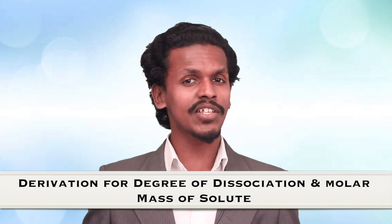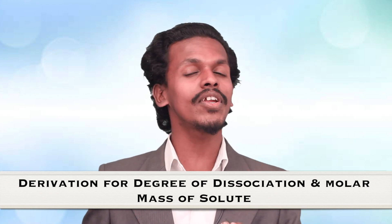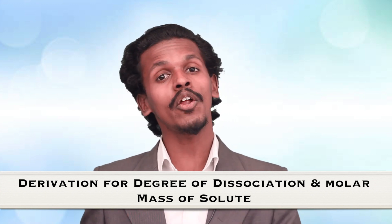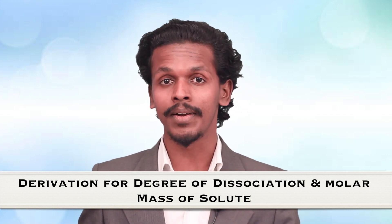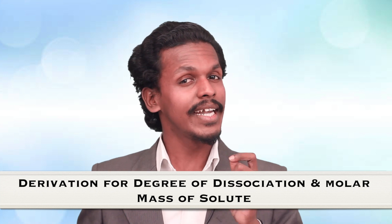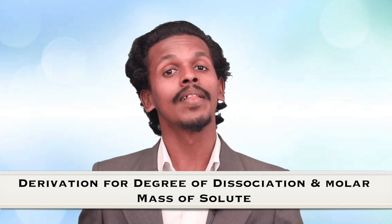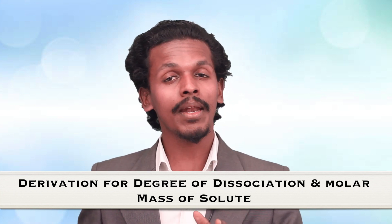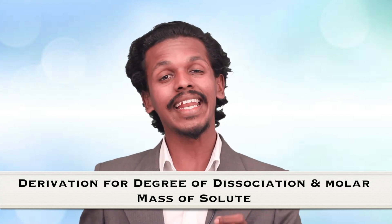So students, in the last lecture we studied a derivation which was related to degree of dissociation and Van't Hoff factor. But now we are going to derive an equation which is related to degree of dissociation, that is alpha, with molar mass of the solute for an electrolyte.